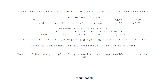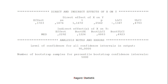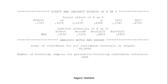Now for the mediation, it's a bit more complicated, because for the key result — the indirect effect — we don't have a p-value. For the p-values for the a-path or the b-path, you can do it the same way I showed you for the moderation. But for the indirect effect, that's not possible, because without a p-value, you can't adjust the p-value.